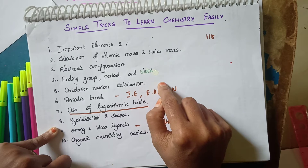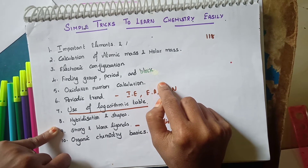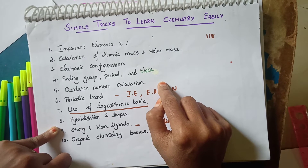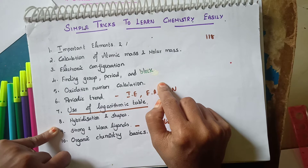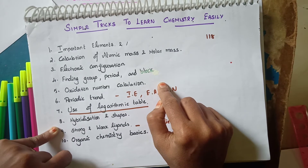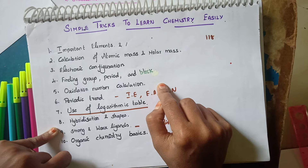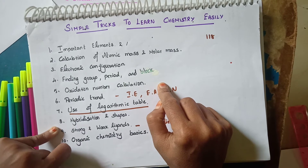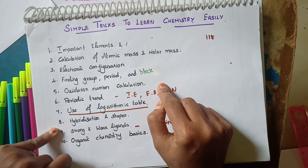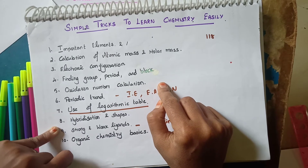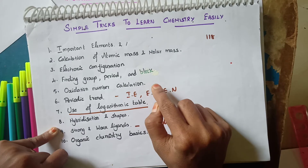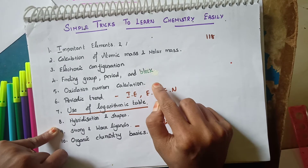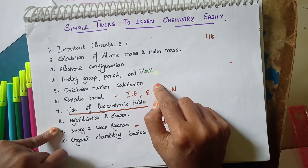The next basic is how to calculate the oxidation number for each element, or the oxidation state of a metal within a compound. For free elements, the oxidation number is zero. The oxidation number varies for metals present in compounds.